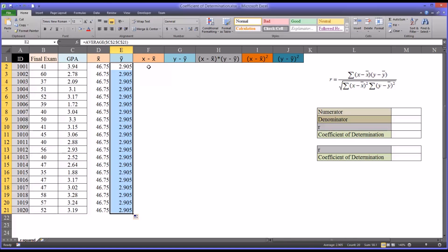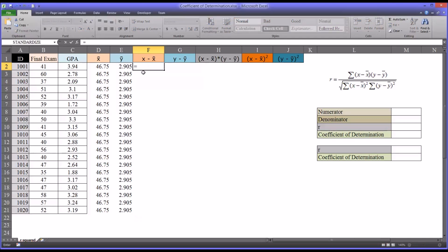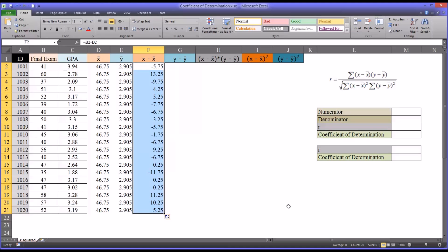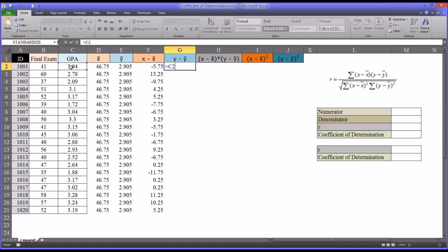The next calculation is to take the observed score and subtract the mean. So in this case, it'll be cell B2 and we'll subtract D2, which is 46.75. So we have negative 5.75 is that observation minus the mean, and we're going to autofill this all the way down. We'll do the same thing for GPA. So it'll be the GPA, which is C2, minus the mean for these 20 GPA scores, which is E2. Let's see, 1.035, and autofill that all the way down.